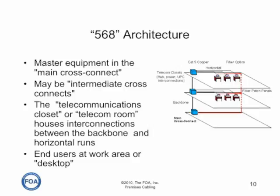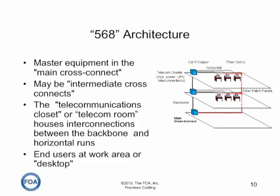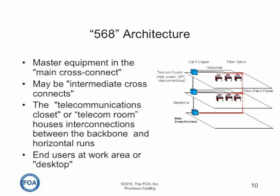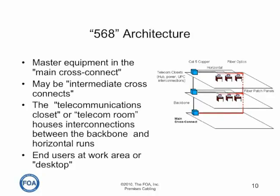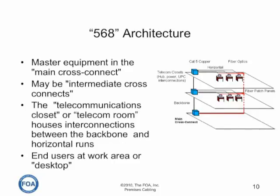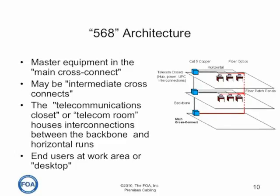The 568 architecture has been changing over the years. The original nomenclature came from the telephone company, so the master equipment was in the main cross-connect, there would be intermediate cross-connects, telecom closets, wiring closets, and telecom rooms. All of these words really only talk about the same locations. There is a page on the FOA website on premises cabling that will link you to a basic history of these nomenclature changes and what the current system calls for. But generally people refer to rooms as the equipment room, the telecom room, and the work area.